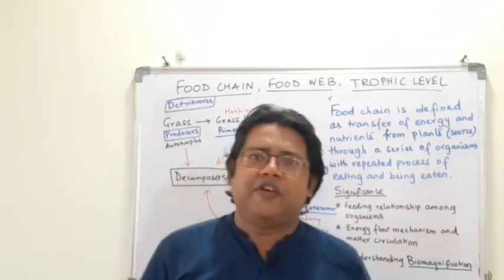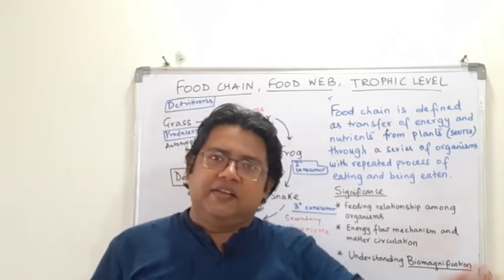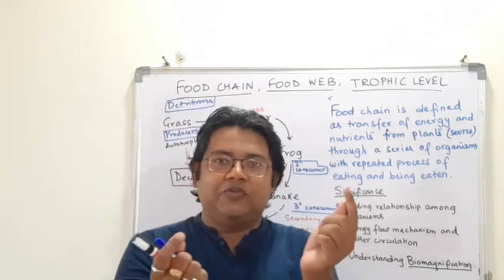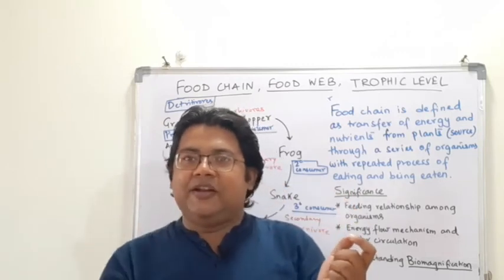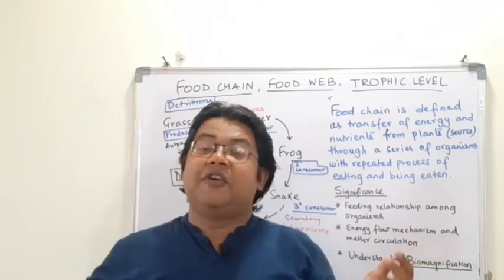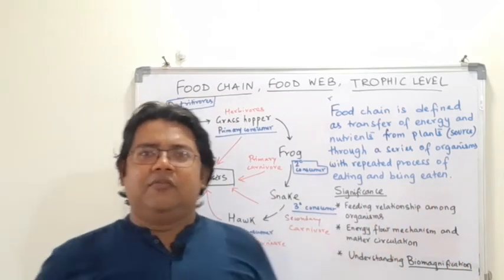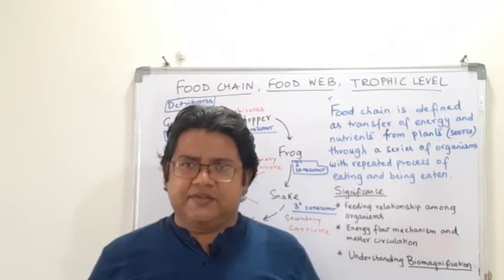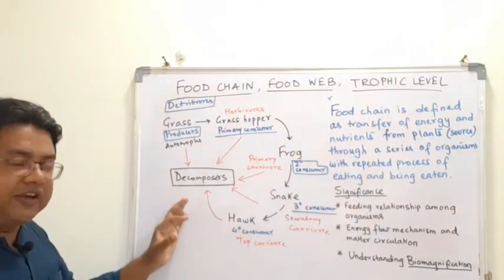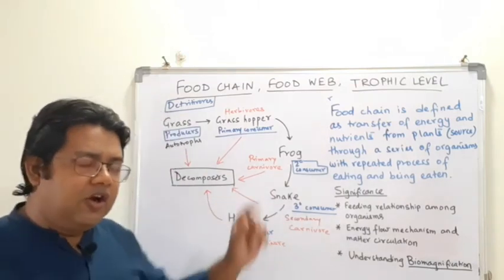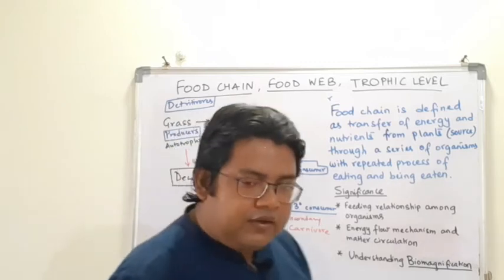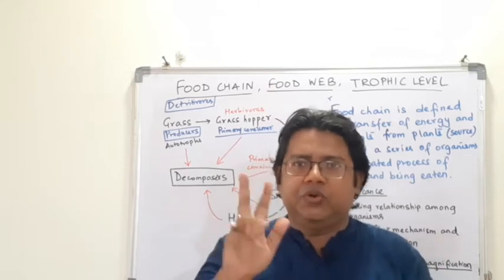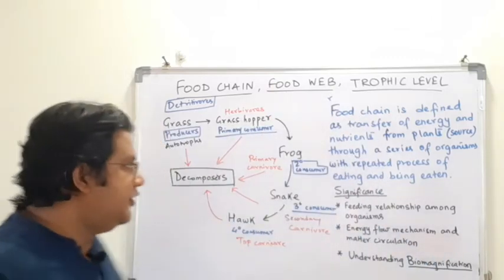There are different food chains based on different habitats. In an aquatic habitat, for example: phytoplanktons are eaten by zooplanktons, zooplanktons are eaten by small fishes, and those fishes are eaten by larger fishes. There are many such examples. Food chains can be classified into two different types, so let me clear the board and write that down.